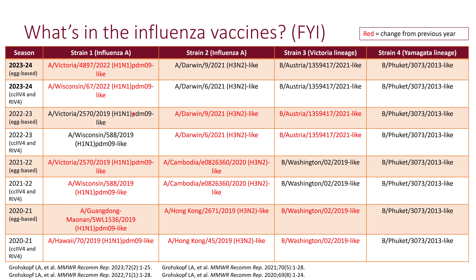What happens from season to season is that some of these strains may get updated. For example, for the 2023-2024 season, strain 1 is getting updated. For the egg-based vaccine, it is now influenza A, Victoria, sequence 4897 from 2022 — that's H1N1. That's different than last year. The rest are identical to what was in the vaccine from the previous year.